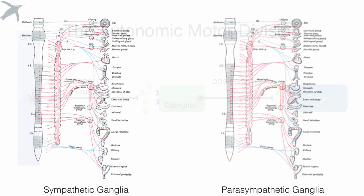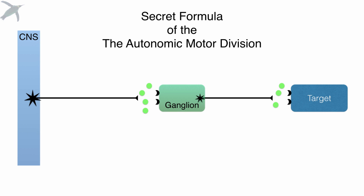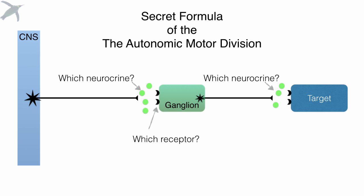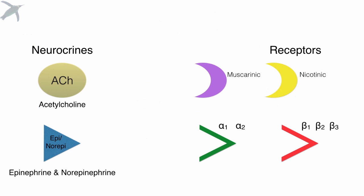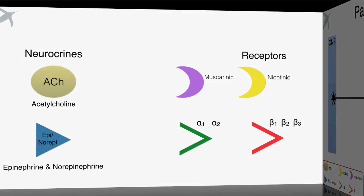Now these ganglia — the location of them depends on which of the two divisions you are looking at. Sympathetic ganglia generally run right along the spinal cord, just parallel to the spinal cord. Most parasympathetic ganglia are out closer to the effectors. So the secret formula of the autonomic motor division is this: you've got to know which neurocrine is released by the preganglionic neuron onto which receptor on the ganglion, then which neurocrine of the postganglionic neuron and which receptor on the target. When you know the combination of these four things, you got it — these are the only neurocrines and receptor types you have to choose from.